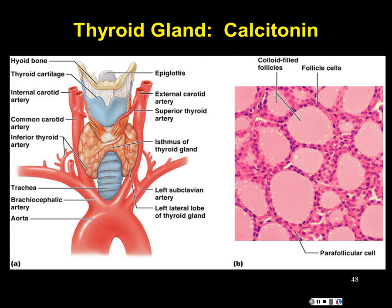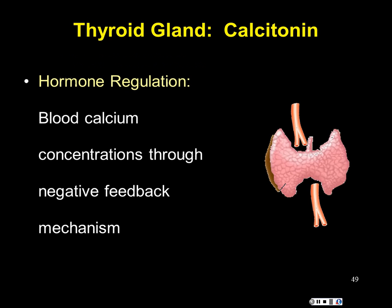So three hormones come from this structure in your neck: thyroxine, which deals with metabolism; calcitonin and parathyroid hormone, which antagonistically regulate blood calcium levels. Calcitonin lowers blood calcium; PTH raises it. Both target bones, intestines, and kidneys with opposite effects at each tissue.